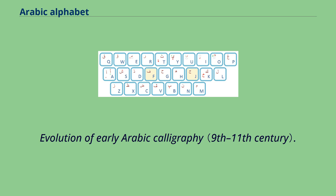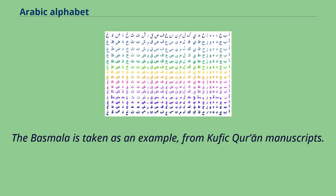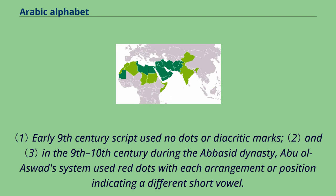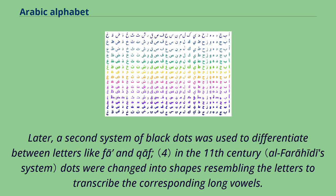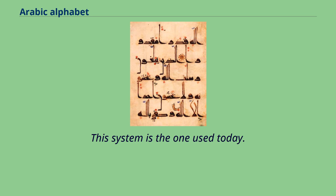The evolution of early Arabic calligraphy can be traced using the Basmallah from Kufic Quran manuscripts as an example. Early 9th-century script used no dots or diacritic marks. In the 9th–10th century during the Abbasid dynasty, Abu al-Aswad's system used red dots, with each arrangement or position indicating a different short vowel. Later, a second system of black dots was used to differentiate between letters like Fa and Qaf. In the 11th century, dots were changed into shapes resembling the letters to transcribe the corresponding long vowels. This system is the one used today.